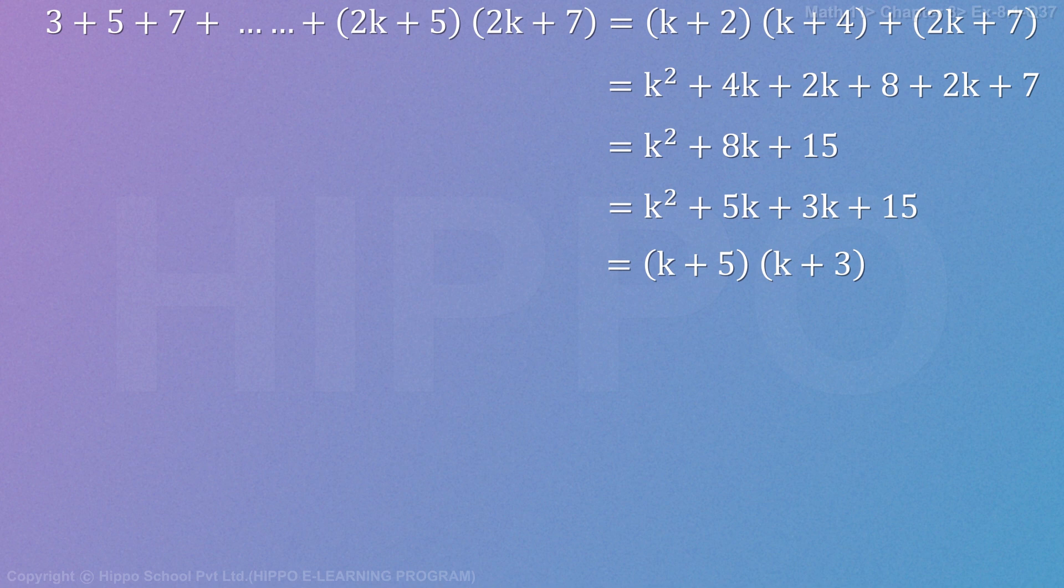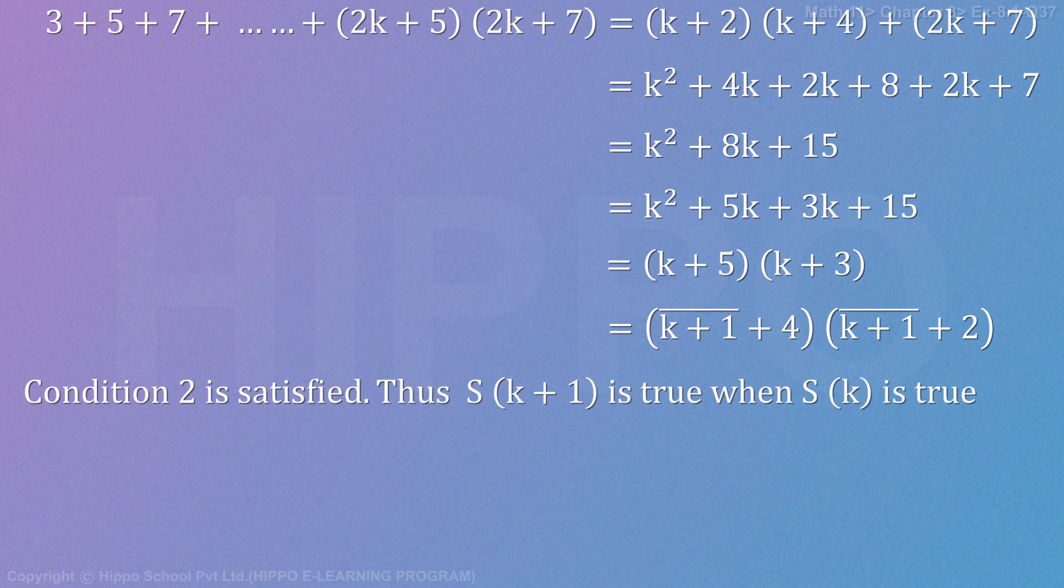Taking common factors, k plus 5 times k plus 3. We can rewrite this as k plus 1 plus 4 times k plus 1 plus 2. Condition 2 is satisfied, thus S of k plus 1 is true when S of k is true.